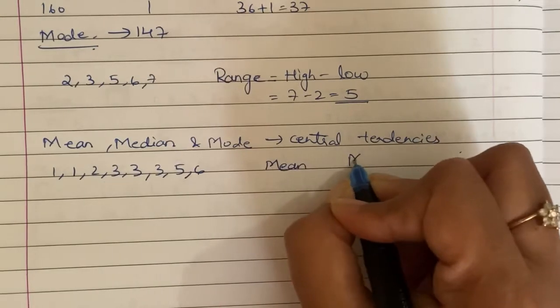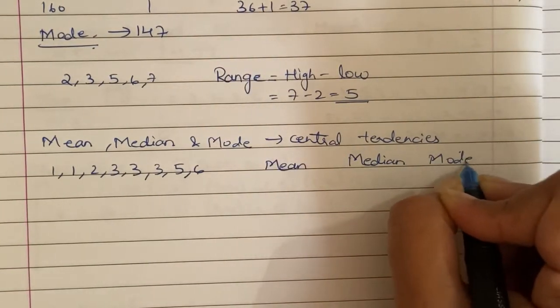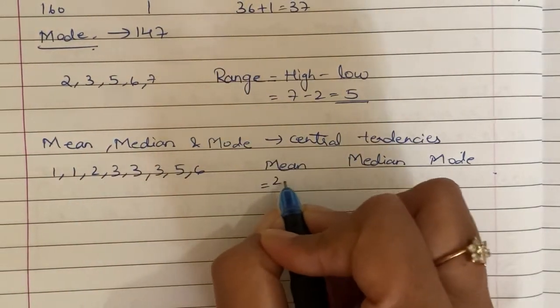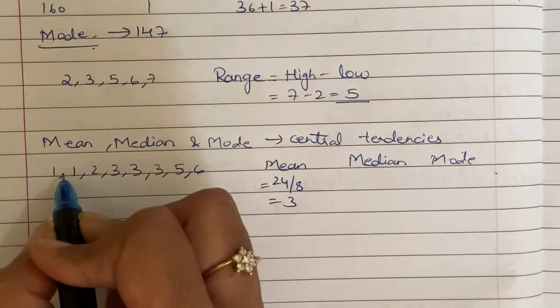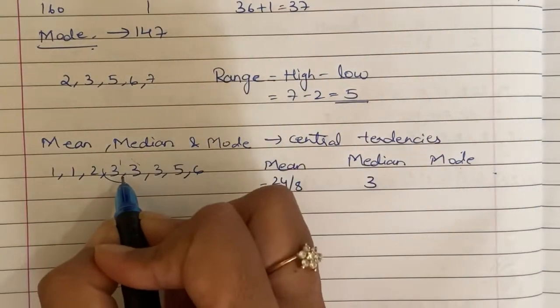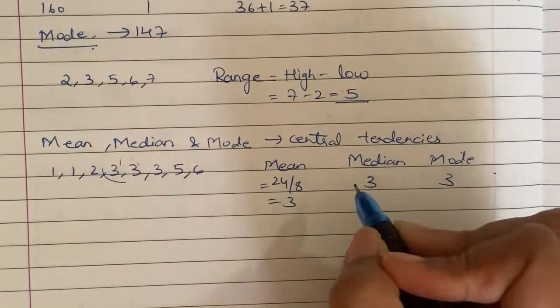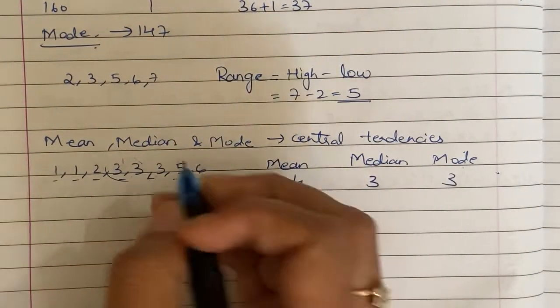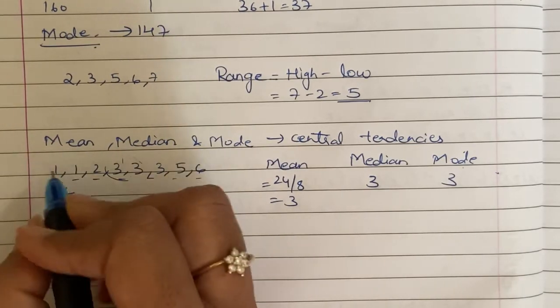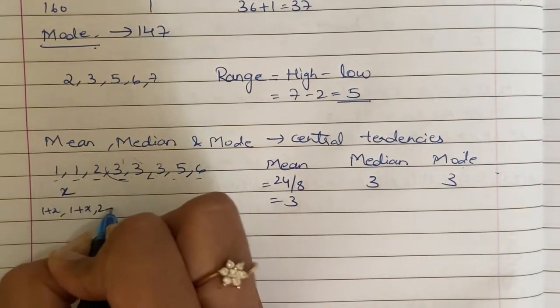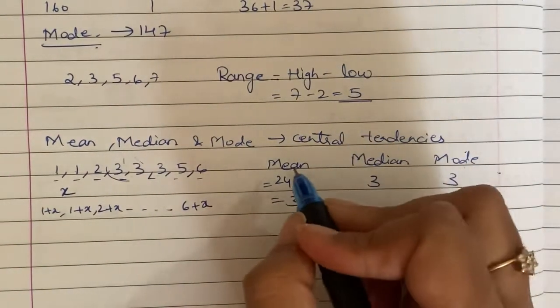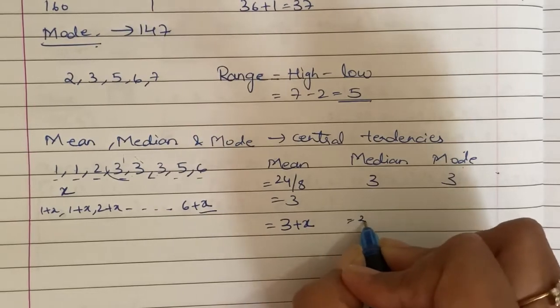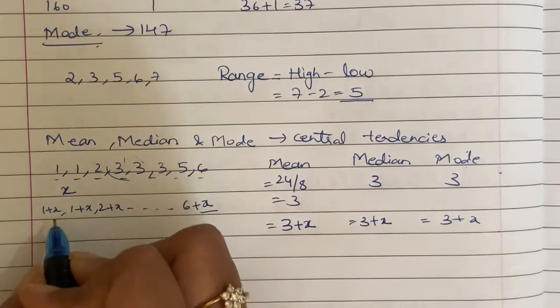1, 1, 2, 3, 3, 3, 3, 5, 6. This is raw data. First, mean, median, and mode find out. Sum of this number is 24. So 24 by 8, mean is 3. Median is middle most. 8 numbers, so 4, 4, 3, 3, average 3. Mode is most repetitive, 3. In this case, mean is equal to median equal to mode. Suppose this is the first observation, let us say x. This is 1 plus x, 2 plus x, last one 6 plus x. Then mean came 3 plus x, median the same x, 3 also x.